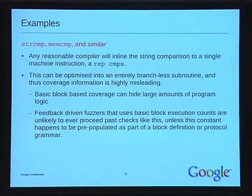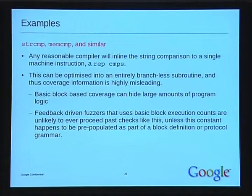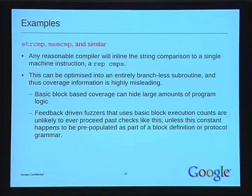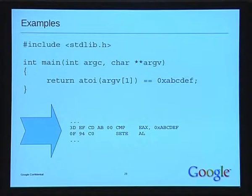Basic block coverage is hiding a large amount of program logic. Feedback-driven fuzzers that use basic block execution — essentially all of them — are never likely to proceed past a check like this, because they have no feedback about how far they're progressing into the comparison. Unless you pre-populate your fuzzer with those strings or the logic to bypass that check, you're just never going to hit it. You can imagine the same thing with simple integer comparisons — any compiler will turn this into a 32-bit comparison, and unless your fuzzer knows how to pass this check, it's just not going to happen.